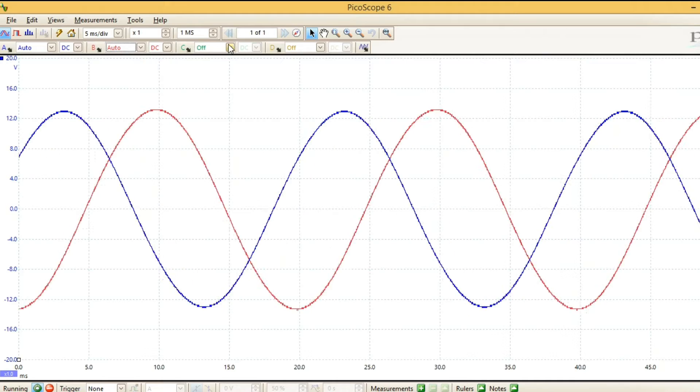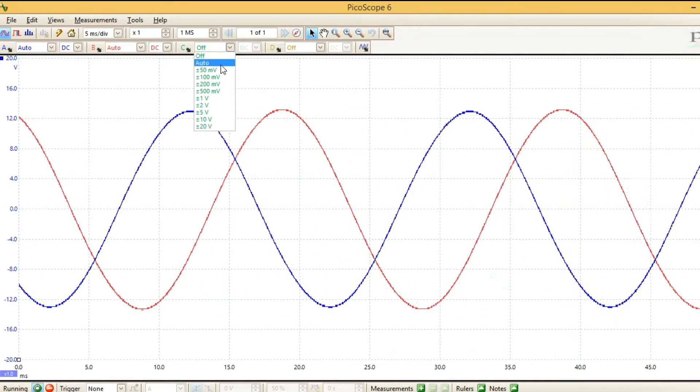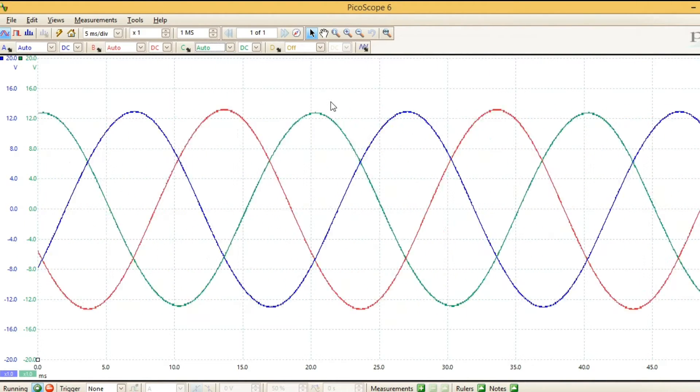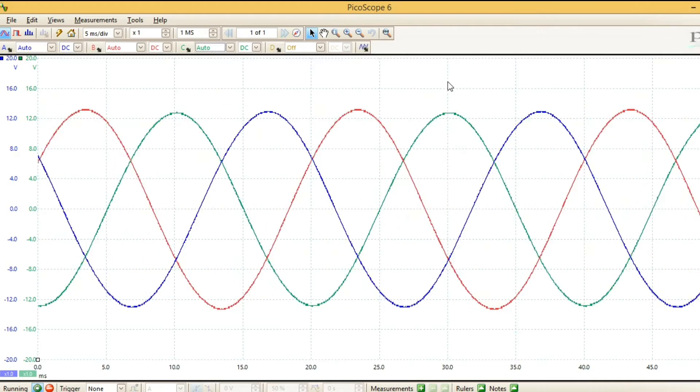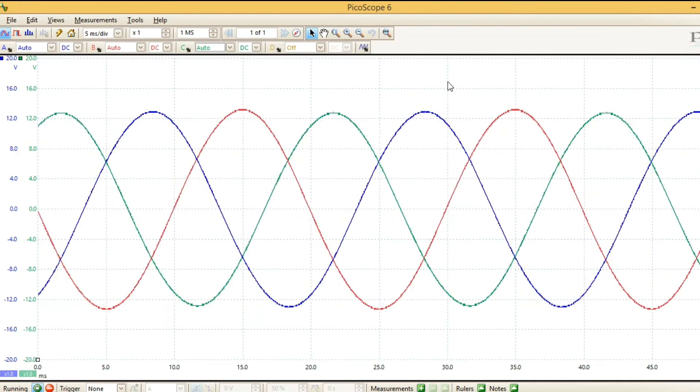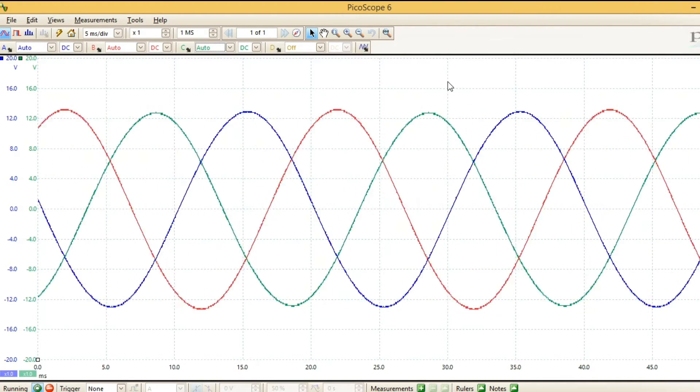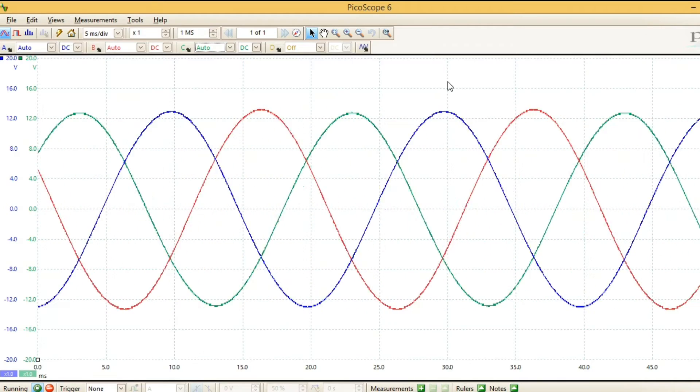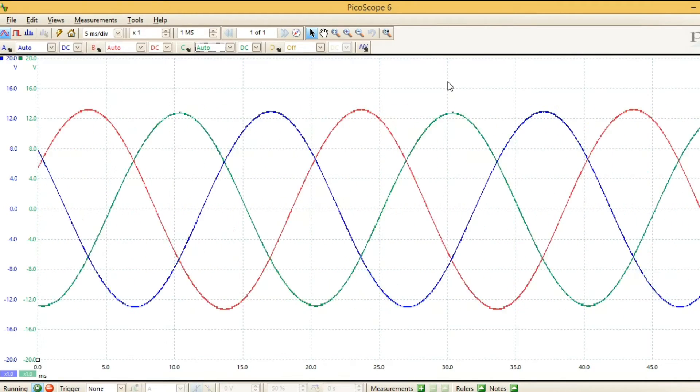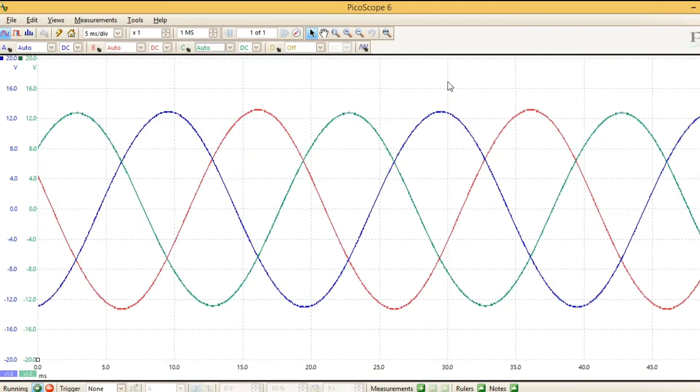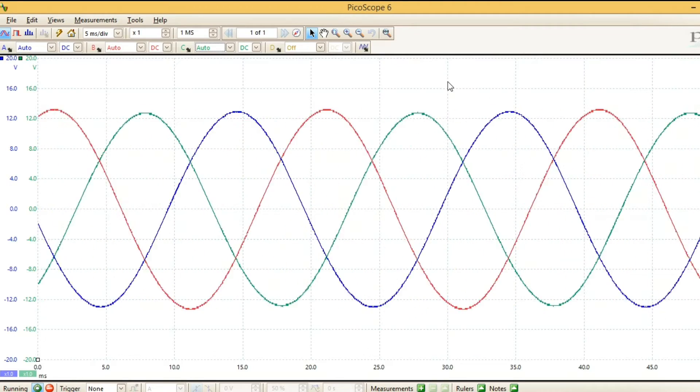If we now turn on the other inputs from our oscilloscope, we bring back our three-phase waveform. We can see there that if we were to measure how far apart each one of these waveforms was in terms of degrees, we would see that they are 120 degrees apart.